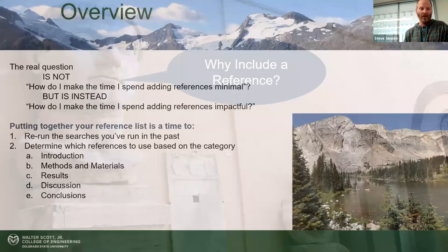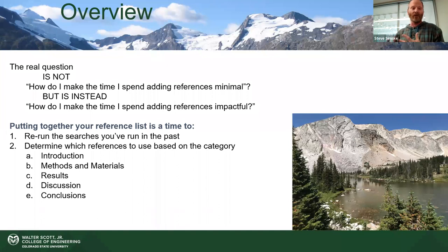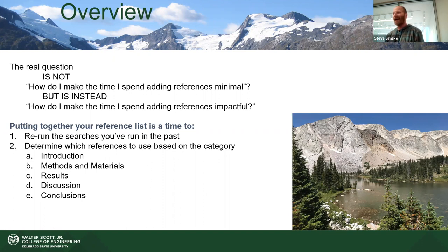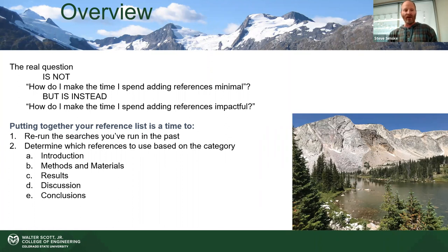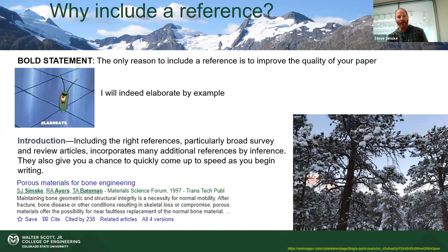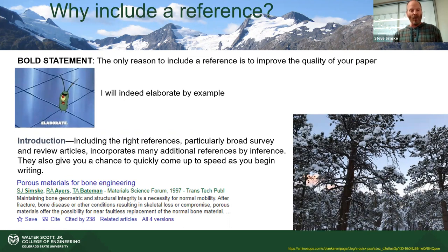One of the worst things I see — and I do this for journals like ICAE — is authors showing up every couple of years with the same references as two years ago. I send the paper back because they haven't done anything to refresh it. We'll also talk about confidential and proprietary documents and IP. Why include a reference? The only reason to include a reference is to improve the quality of your paper. I will elaborate in five different ways, starting with the introduction.